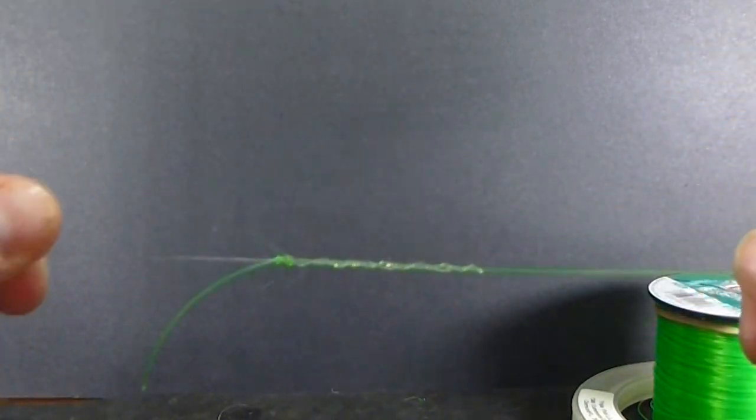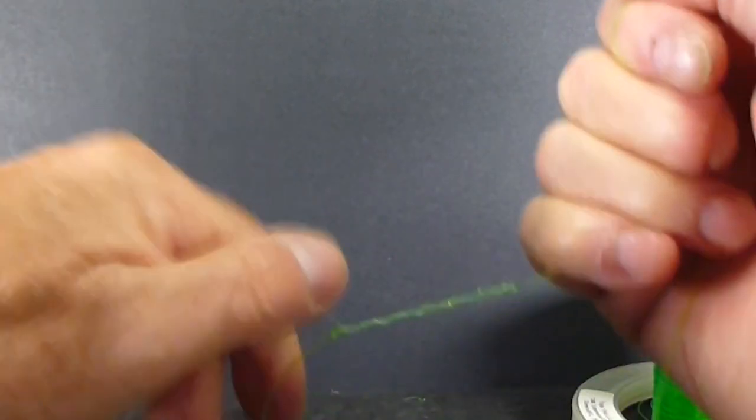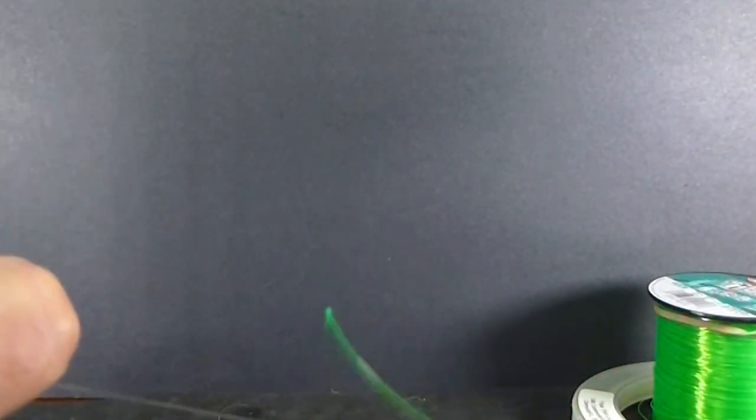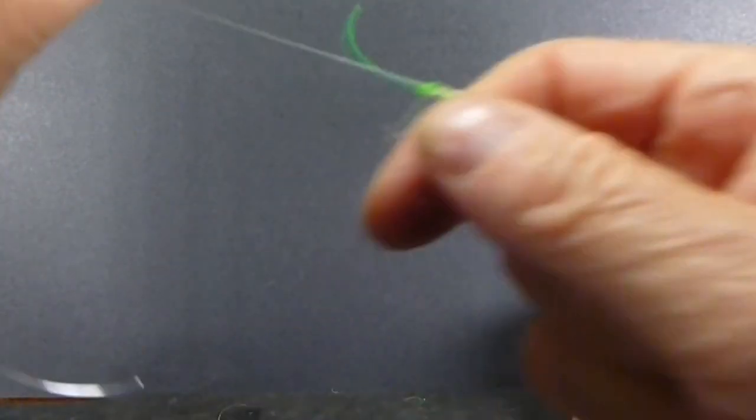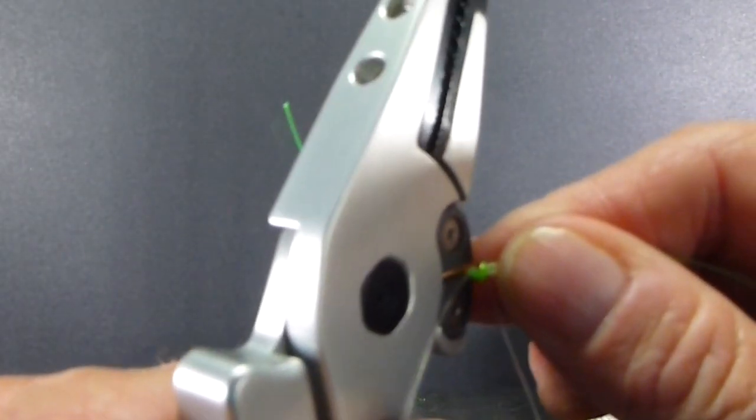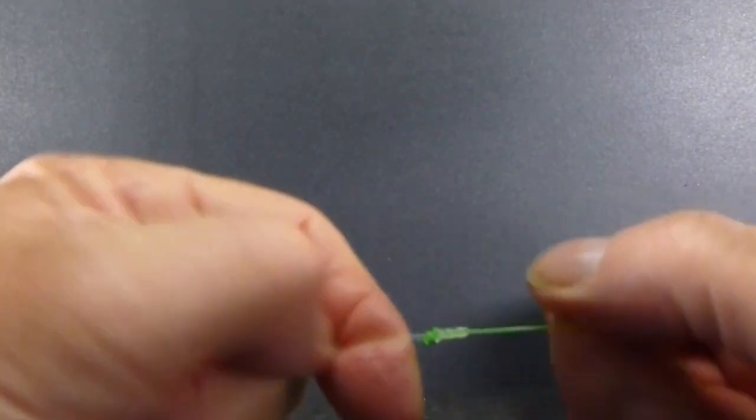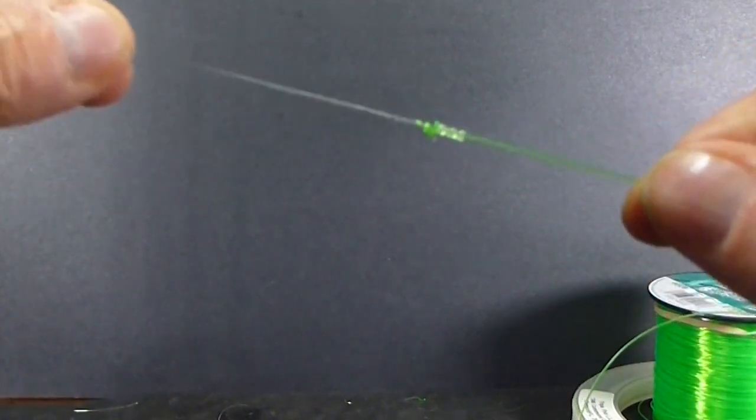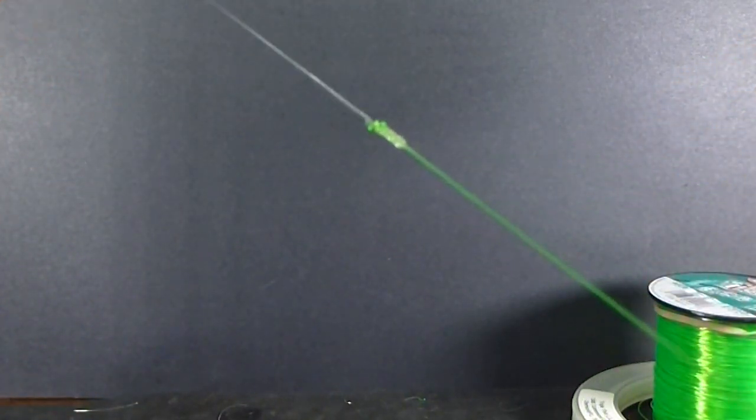You must moisten that up good so it slips. And we'll get our hands in here good on both sides and give it a good stiff pull. And that will snug right up. It's called a Slim Beauty. And that will tie off. It comes off straight off each other. It's a great way of tying two heavy and a light piece of leader material together.